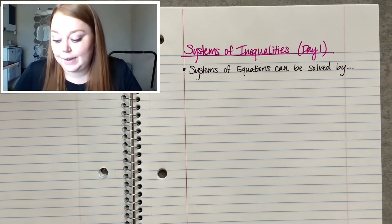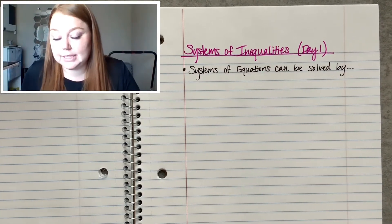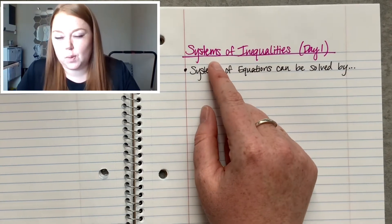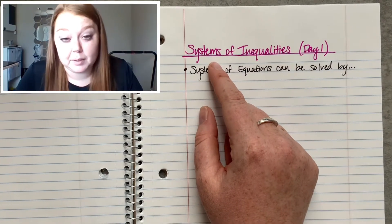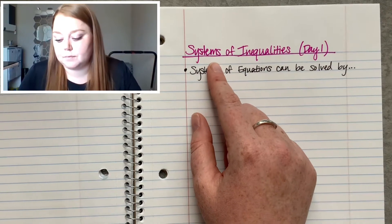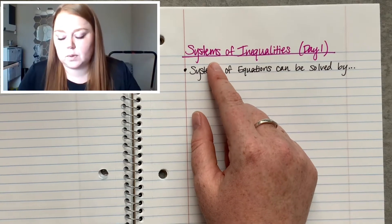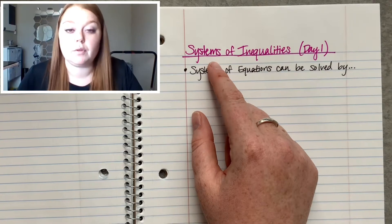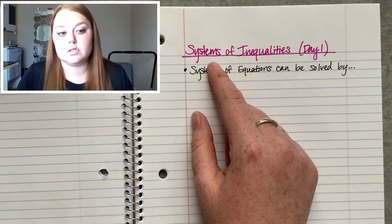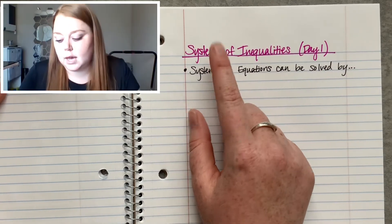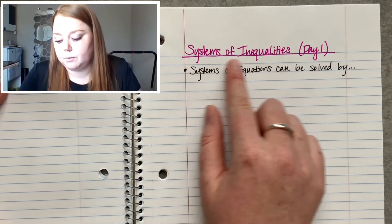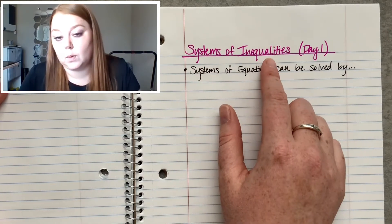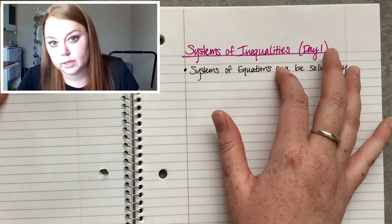Hi guys. We're still working with systems today. We've been doing systems of equations for probably a month now. Systems are when you're going to use a system when you have more than one variable that you're trying to solve for. So this year we're solving for two variables. But now we're going to be solving not equations, but inequalities — systems of inequalities.